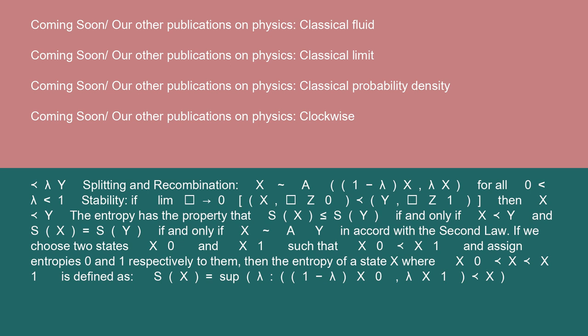If we choose two states X0 and X1 such that X0 precedes X1 and assign entropy 0 and 1 respectively to them, then the entropy of a state X where X0 precedes X precedes X1 is defined as S(X) equals sup lambda (1 minus lambda) X0, lambda X1 precedes X.